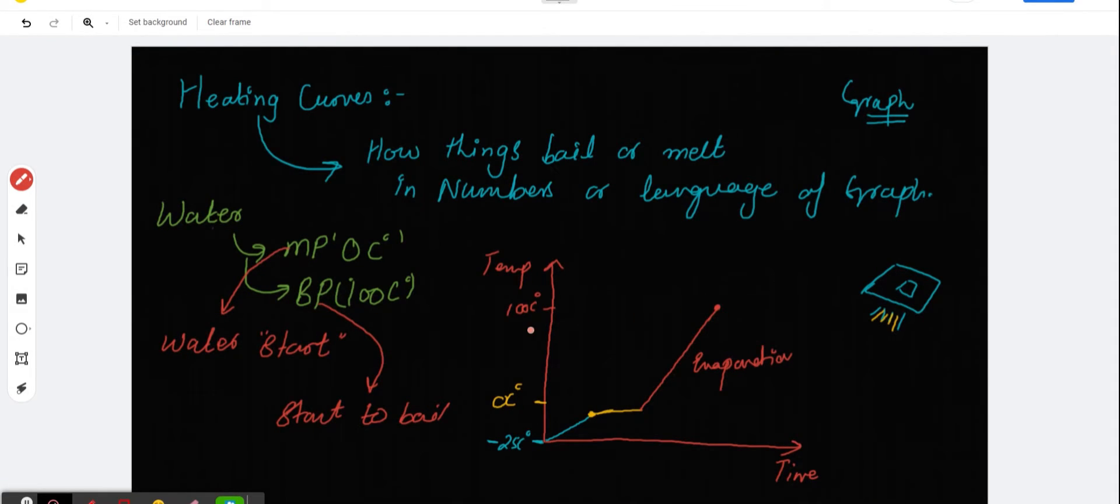Once it reaches 100 Celsius, this point, what will happen? Again it gonna stay there so that all the water could boil up. This is the phase of boiling. This is the point where boiling starts. It will stay there so that boiling could happen. If you increase the temperature, boiling and evaporation both will increase. So this is a point where melting starts and over here melting ends. Over here evaporation gonna start, here boiling starts. If we represent melting points and boiling points in this way, this is called heating curves.